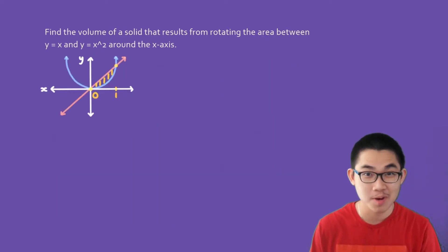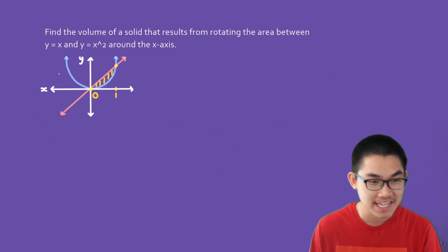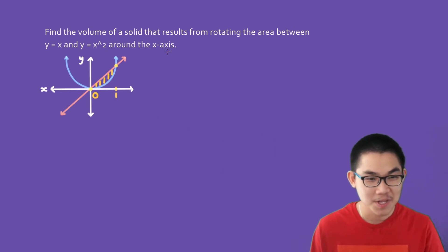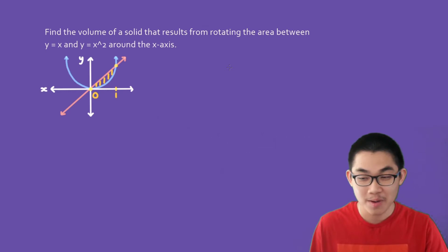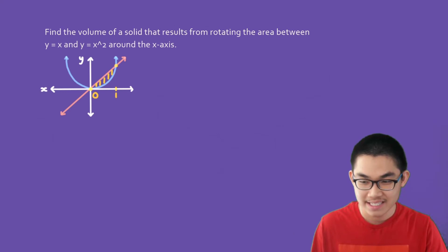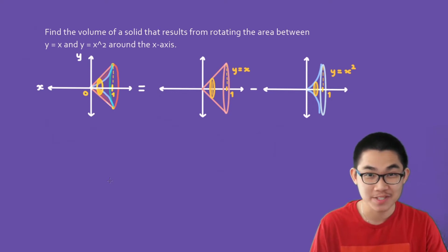Now let's do one more example of solids of revolution. Find the volume of a solid that results from rotating the area between y equals x (the pink function) and y equals x squared (the blue function) around the x-axis. We have the area between these two functions, and if we rotate it around the x-axis, the resulting solid looks something like this. This solid is a bit harder to visualize, so let's break it down into smaller steps.